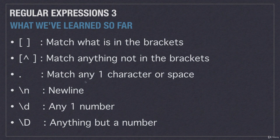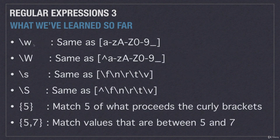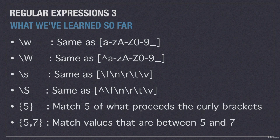Here we can match any one character or space, new line, any one number, or anything but a number. The lowercase w with the backslash is the same as matching any letter or number whether lowercase or uppercase, and this is anything except those. This is any whitespace or tabs, and anything except whitespace. This will be used if we want to match five of what precedes, and this is to match values between five and seven.